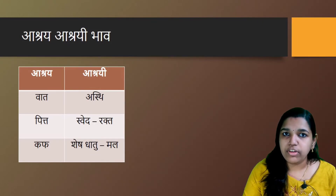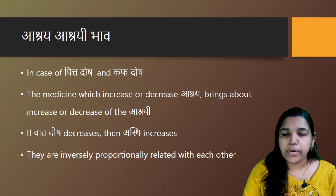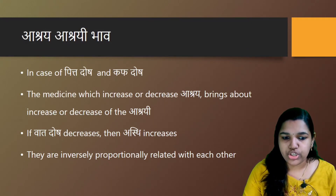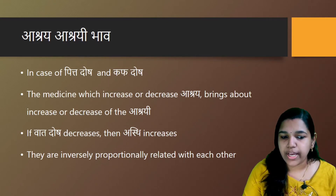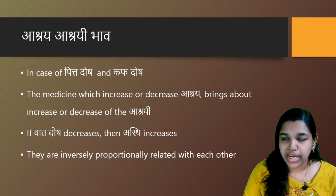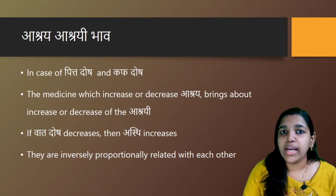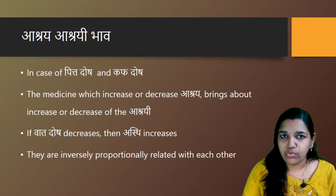One Dosha has an intimate relationship with certain Dhatus or Malas. The property of this Aashraya Aashrayi Bhava is that, in case of Pitta and Kapha Dosha, the medicines given for increasing or decreasing the Aashraya will bring about the corresponding increase or decrease of the Aashrayi also. Whenever the Aashraya gets Vrithi or Kshaya, the Aashrayi will also get Vrithi or Kshaya. This is applicable for Pitta and Kapha Dosha.